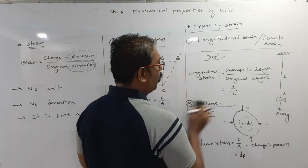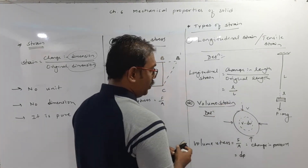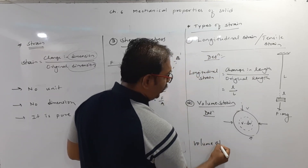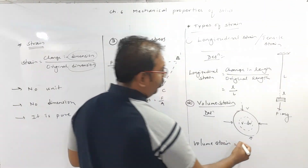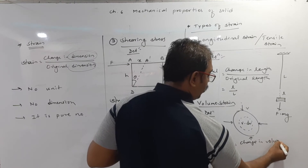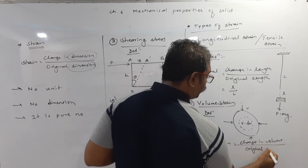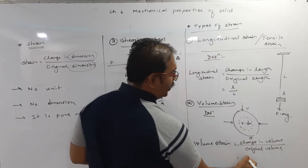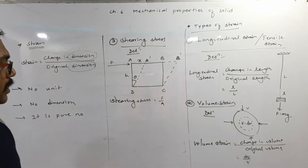The second type is volume strain, which is related to change in volume. Volume strain equals change in volume divided by original volume. If the change in volume is dV and the original volume is V, then volume strain equals dV/V.